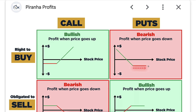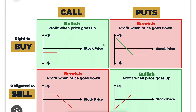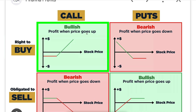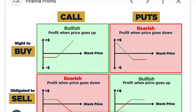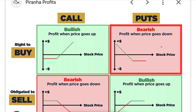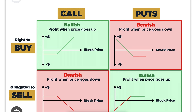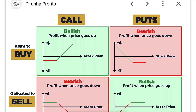This chart also helps you decide what strategy to use. If you are bullish and expect prices to go higher, you buy a Call option or sell a Put option. If you expect prices to go lower, you buy a Put option or sell a Call option. You can go through this one by one.